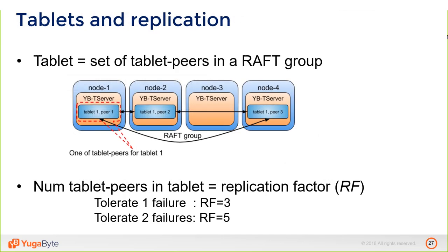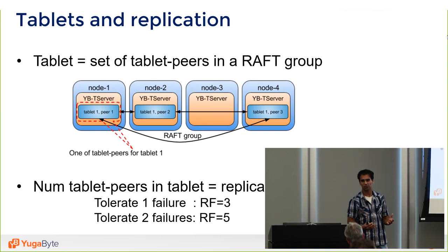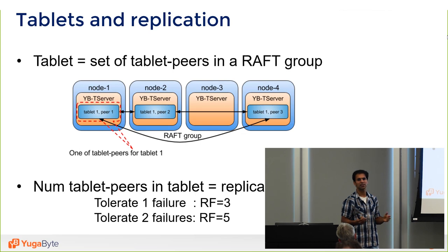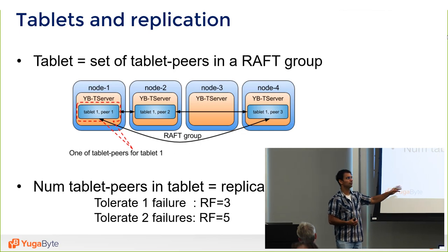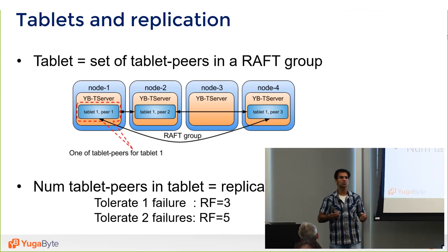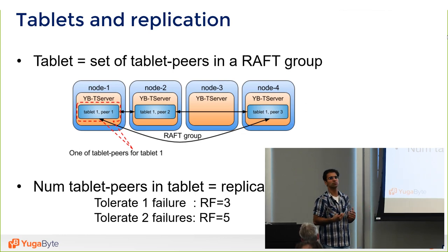Every tablet, which owns a certain set of keys, is replicated according to the replication factor. Multiple nodes with tablet servers are selected to host copies of the tablet. Each copy is called a tablet peer, and they all enter a Raft replica group that does strongly consistent replication. The replication factor controls how many members are in these Raft groups — replication factor 3 survives one failure, 5 survives two, 7 survives three, and so on.